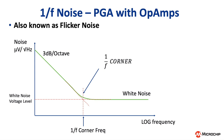At high frequencies, this comes in the form of white noise, meaning that the spectral density is held constant with respect to frequency. This holds true over most of the op-amp's frequency range. However, at low frequencies, this spectral density increases at a rate of 3 decibels per octave. In this region, the spectral density is inversely proportional to the square root of the frequency, which gives us the name 1-over-f noise. The frequency at which the flicker noise starts is referred to as the corner frequency, and the lower the frequency that the flicker noise appears, the better.